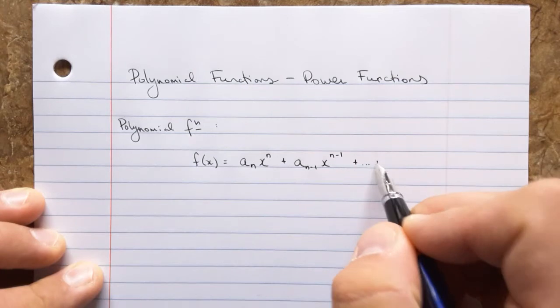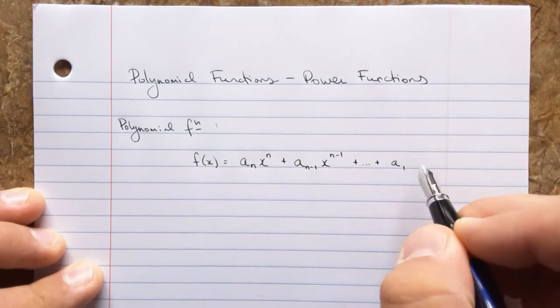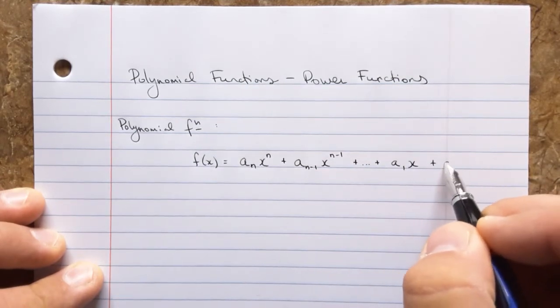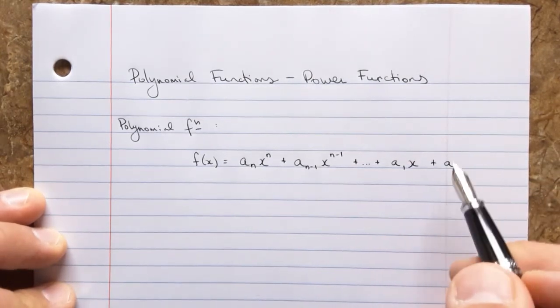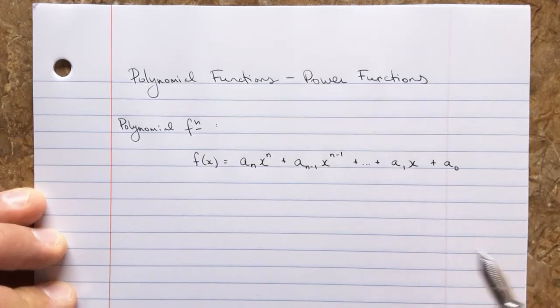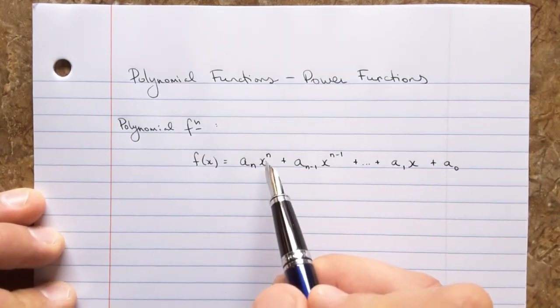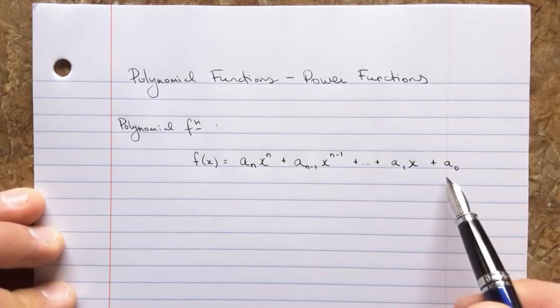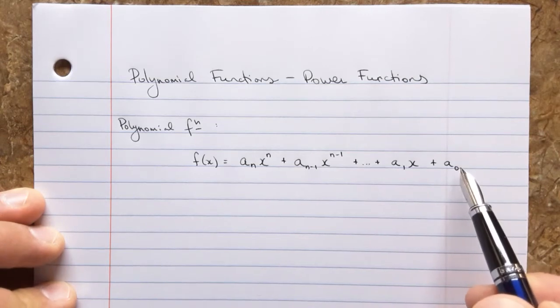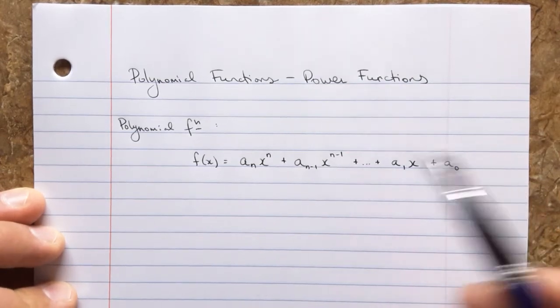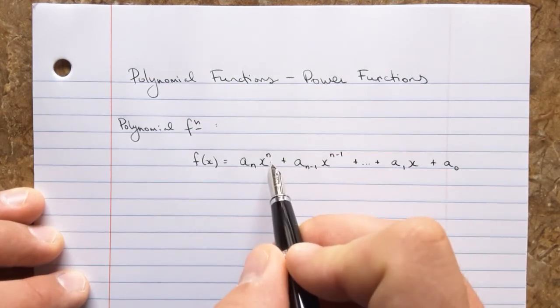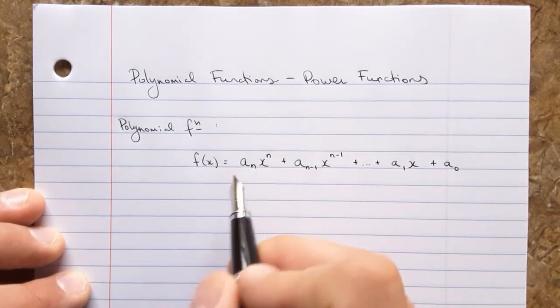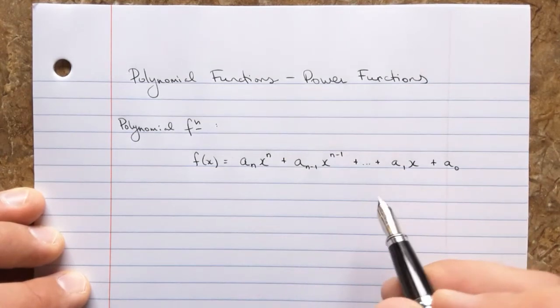We do that all the way down until we get to the last couple of terms. Now a polynomial can have just a constant term, this one at the end, or it can have any number of terms in the middle here. We usually write them from highest degree down to lowest degree. This is a degree zero term at the end right here. And this, once again, is called the leading coefficient. And this n is the degree of the polynomial.